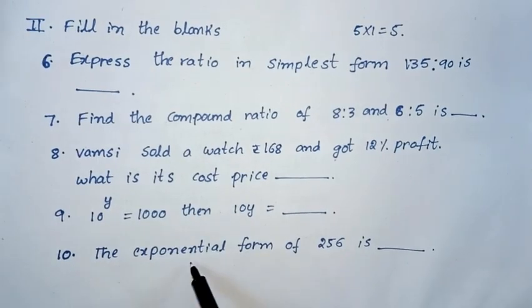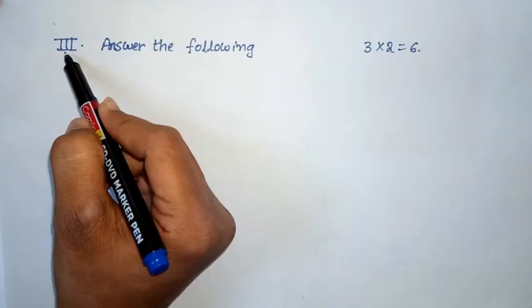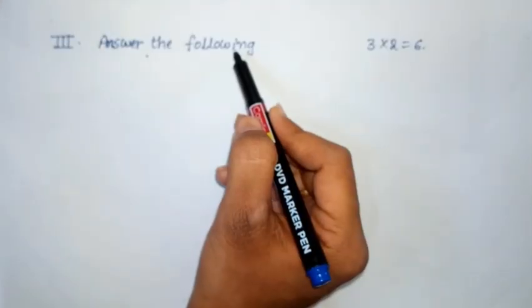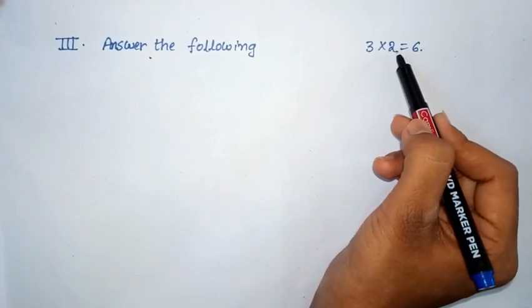Tenth question, the exponential form of 256 is dash. Third roman, answer the following. So, total 3 questions, each one carrying 2 marks. Total 6 marks.